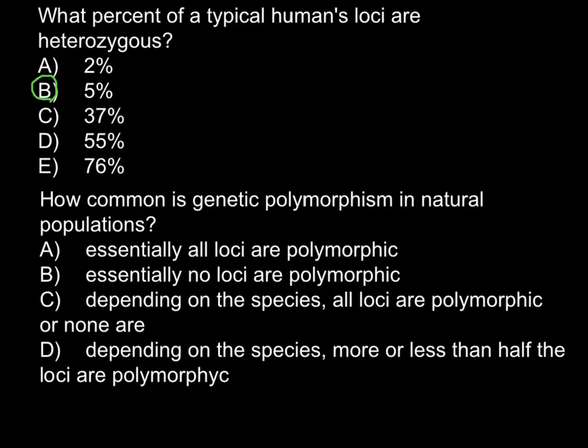How common is genetic polymorphism in natural populations? Answer A: essentially all loci are polymorphic. B: essentially no loci are polymorphic. C: depending on the species, all loci are polymorphic or none are. And the last answer D: depending on the species, more or less than half of the loci are polymorphic.